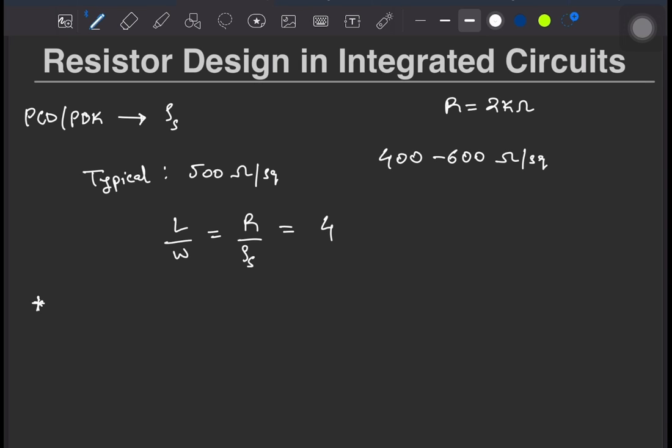This brings us to the second important parameter of interest, which is the matching coefficient. It is typically described in terms of percent times micrometer or percent along with the W and L that they use to characterize it.